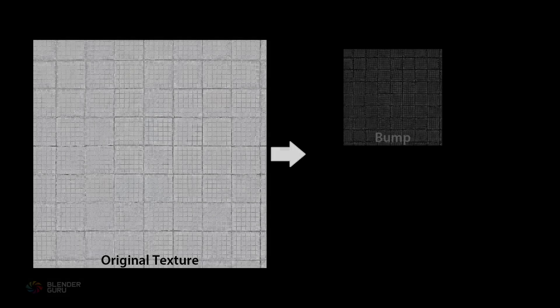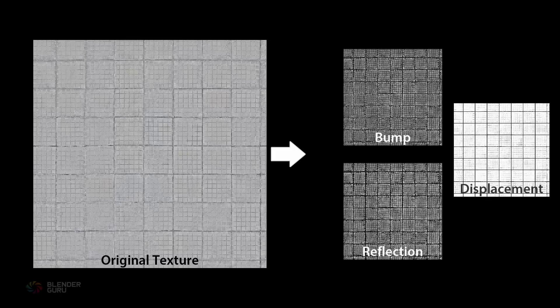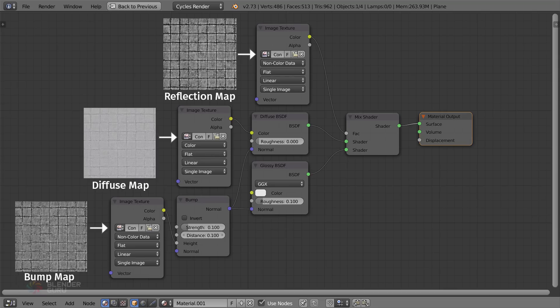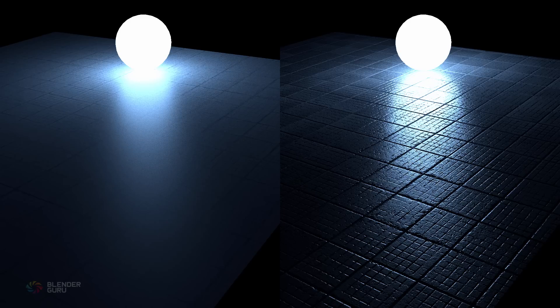So that's what you're going to learn in this tutorial. Within the next 5 minutes, you'll discover how to take this image texture and create a bump map, reflection map, and displacement map from it. Then we'll put it all into Blender to create a realistic material that goes from this to this.